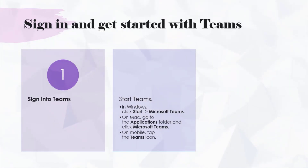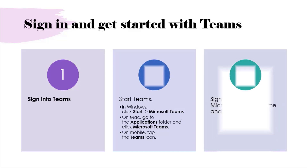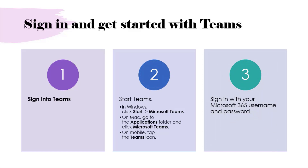After you sign in, the first step is to start Windows. If you are using Microsoft Teams on mobile, click the Teams icon. If you are on desktop, click on the Microsoft Teams application. Then sign in with your Microsoft 365 username and licensed password. These are the three steps whether you are on mobile, desktop application, or Apple or Android device.